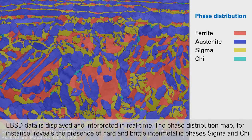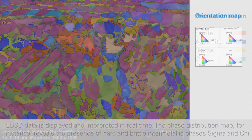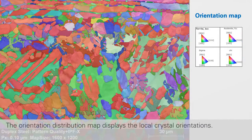The phase distribution map, for instance, reveals the presence of hard and brittle intermetallic phases sigma and chi. The orientation distribution map displays the local crystal orientations.